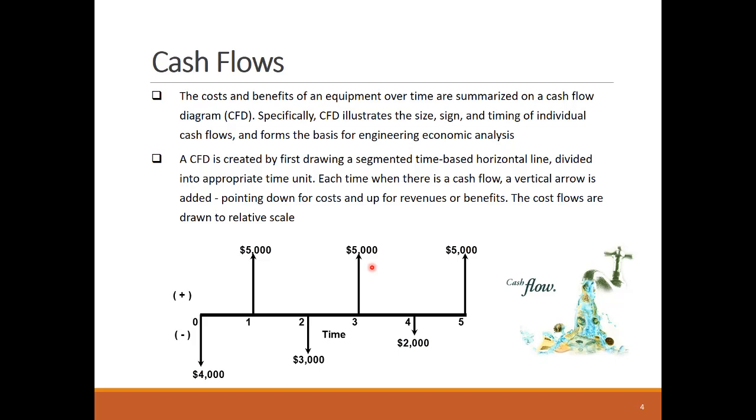Cash flow diagrams are used to visually represent the flow of positive and negative cash streams because of the ownership and use of the equipment. The positive cash flows or inflows are represented with upward arrows. The negative cash flows or outflows are represented using downward arrows. The cash flow of the year is summed up and placed at the end of that period, except for the initial cost at the beginning of the cash flow. For example, this $5,000 occurs over the first time period, but it's represented here as a single sum of money at the end of the first time period.